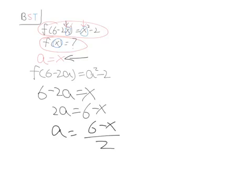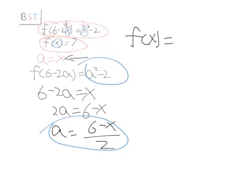And we know about a... What we really need to find out is just one step. f of x equals... Just substitute the a right here into this function, into this equation. And we get 6 minus x over 2 squared minus 2 equals f of x.